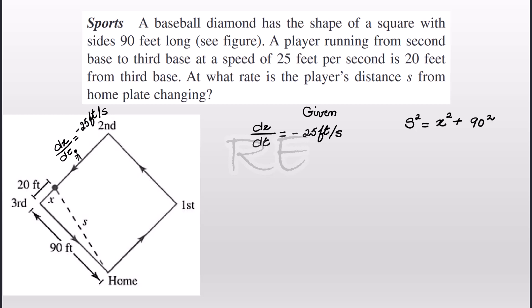Therefore, we have s squared is equal to x squared plus 90 squared. We model it with a right triangle with the two legs 20 and 90 feet and the hypotenuse s.